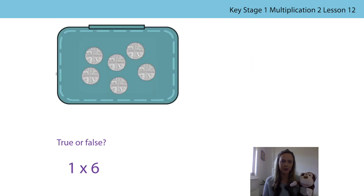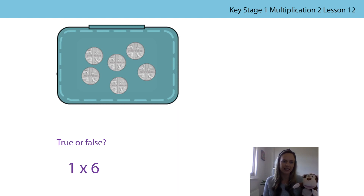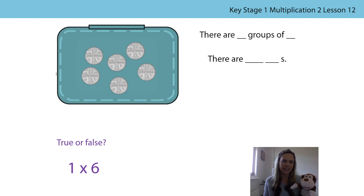We're going to look at a true or false question now — Bongo is very excited, he enjoys doing these. Let's have a look at the picture. What can you see? Can you explain to somebody at home what you can see? Now let's have a look at the multiplication expression — it says one times six. Does that multiplication expression represent the picture? Is it true or false? See if you can explain to somebody at home what you think. You could use the stem sentences to help you.